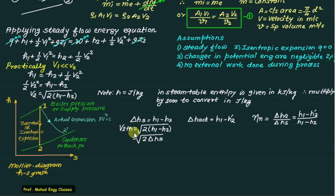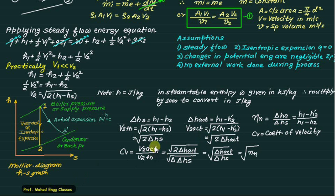The theoretical velocity is V2-theoretical equals the square root of 2·delta-hs, and the actual velocity is V2-actual equals the square root of 2·delta-actual. The coefficient of velocity Cv is defined as V-actual divided by V-theoretical. Substituting these expressions, the 2s cancel and we get Cv equals the square root of (delta-actual divided by delta-hs), which is the same as the square root of nozzle efficiency. Therefore, Cv equals the square root of nozzle efficiency, or nozzle efficiency equals Cv squared.